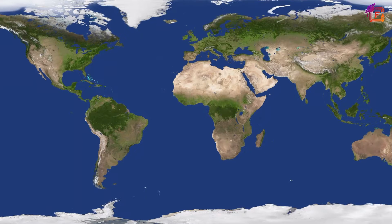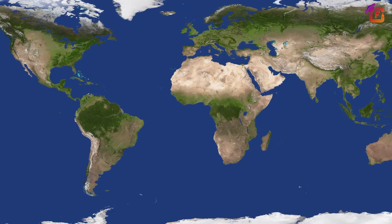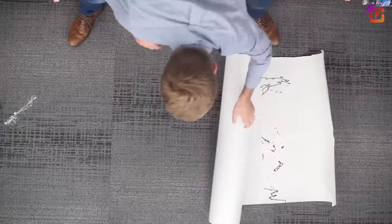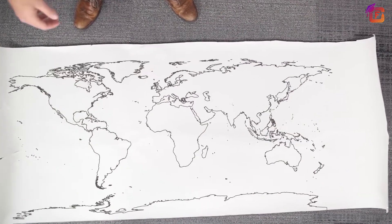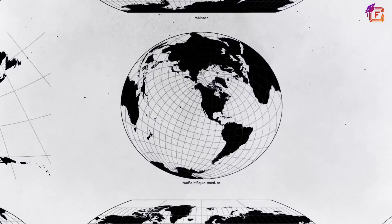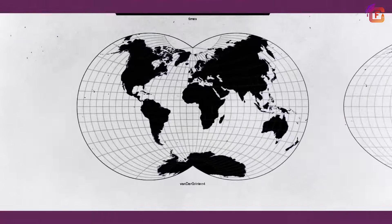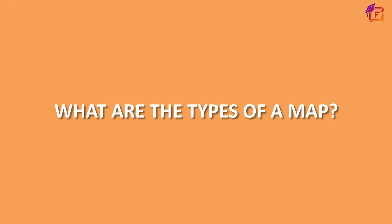Hello learners, welcome to the video. In the previous chapter we have learned about maps. The term map generally refers to a true pictorial representation of the earth on a flat surface with features of an area or a portion of it according to scale. Now, what are the types of maps?